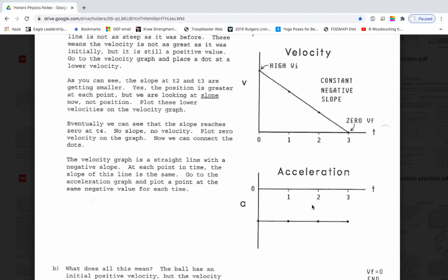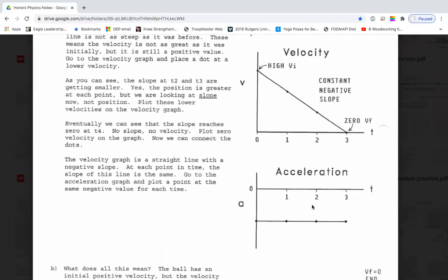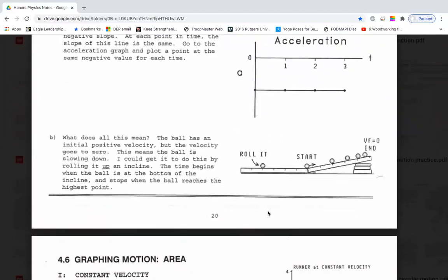Could we see a negative acceleration in our lab with the steel ball? Sure. Roll it along and let it go up the ramp. As it goes up the ramp, it slows down and comes to a stop.